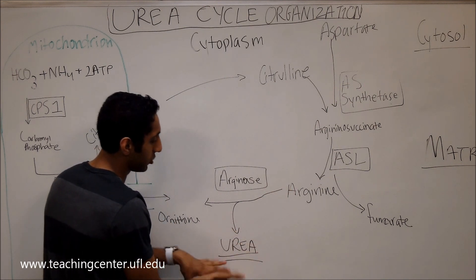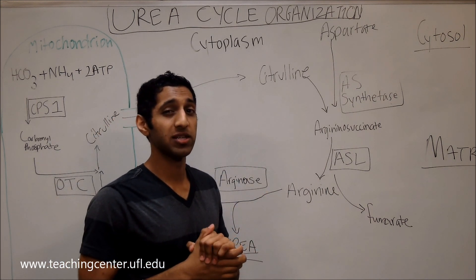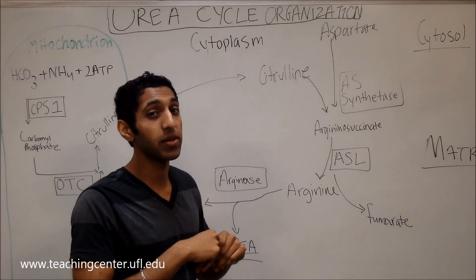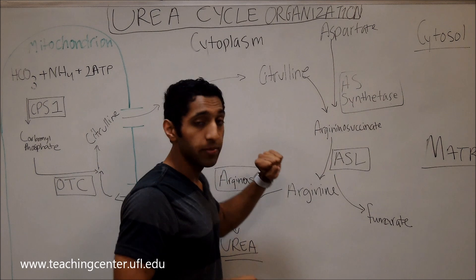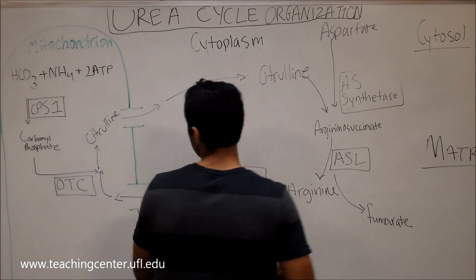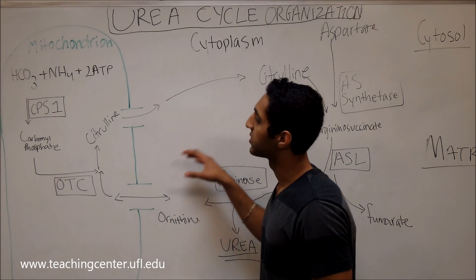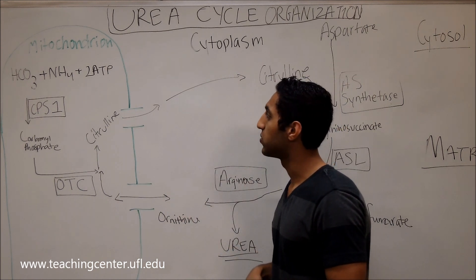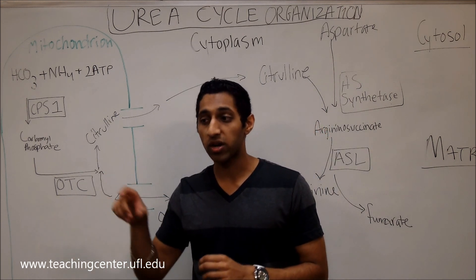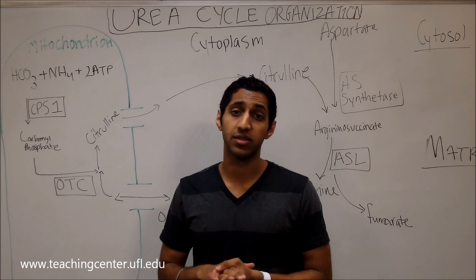Some key points to study for the test: the urea cycle has key players like CPS1, glutamate, aspartate, arginase, and citrulline. Try to understand what purpose each of these key players serves — that helps you understand how the urea cycle functions. Also try to follow where the ammonium is in each of the intermediates, and that'll give you a more firm understanding of what the urea cycle is all about.